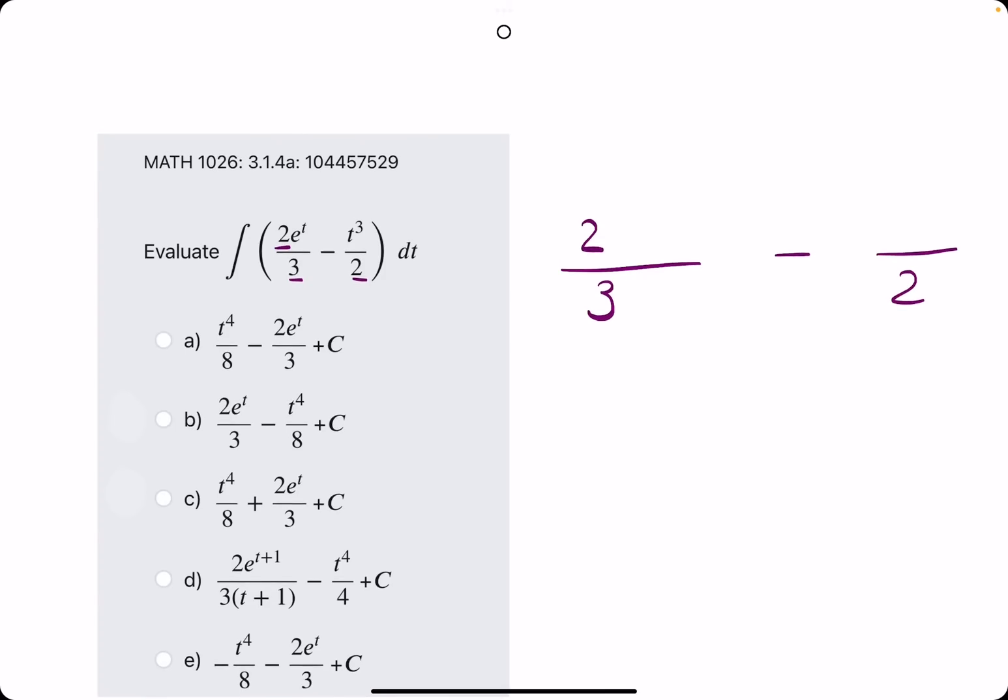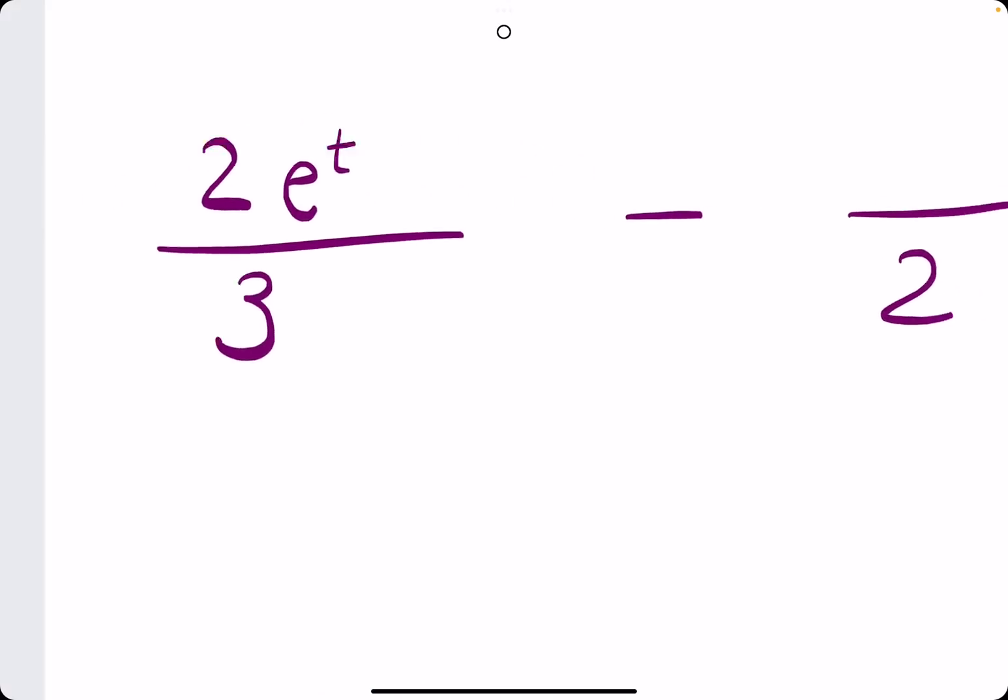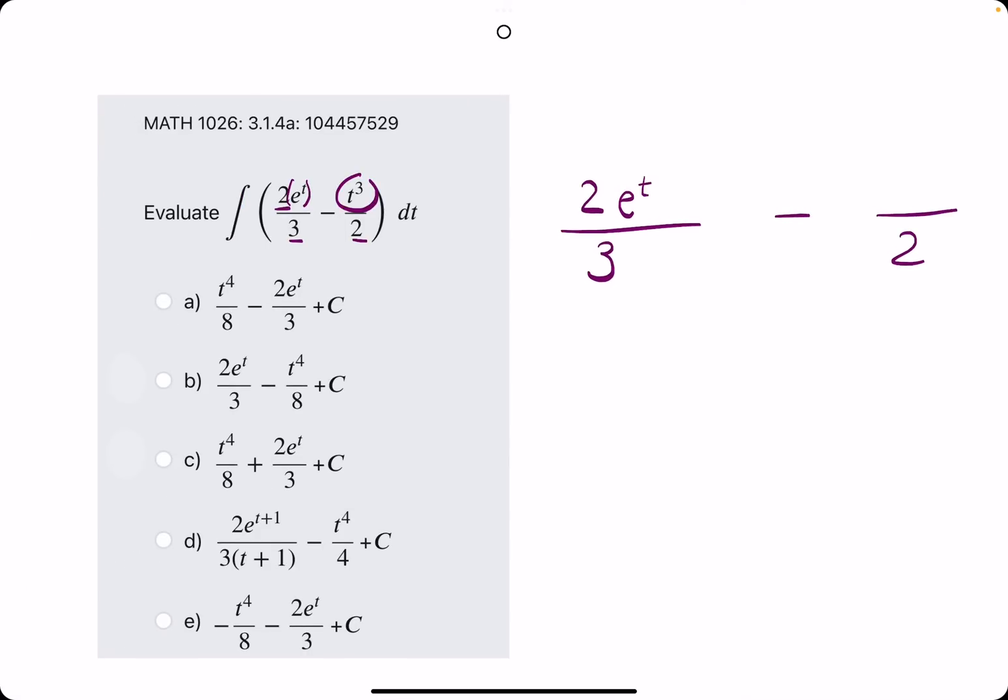So 2 over 3 in the first term, but then the question is, what's the antiderivative of e to the t? Well, that's just e to the t. And then we keep the minus, and then it's t cubed.